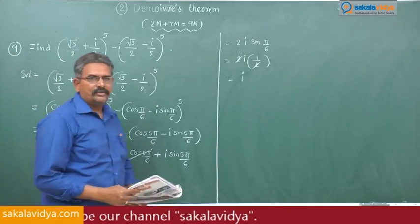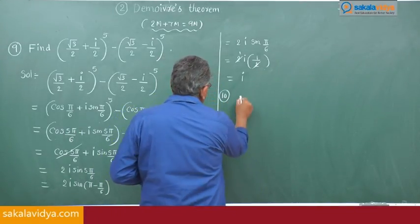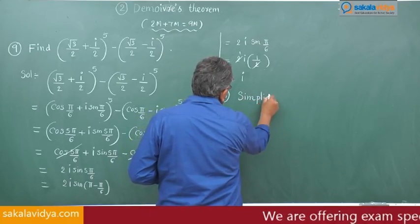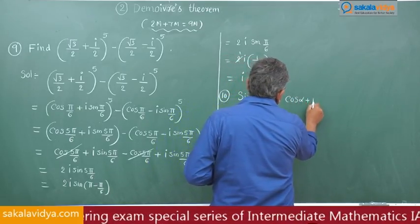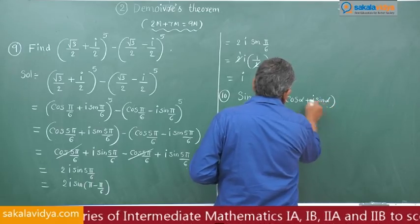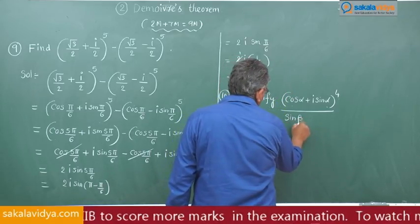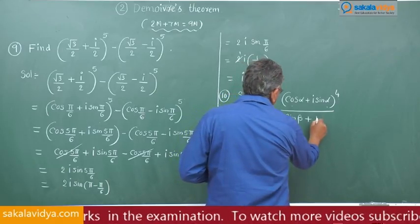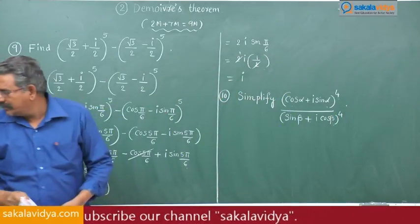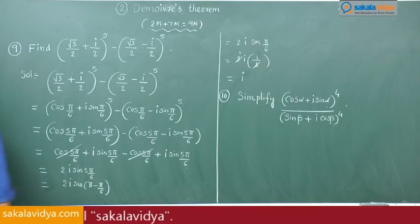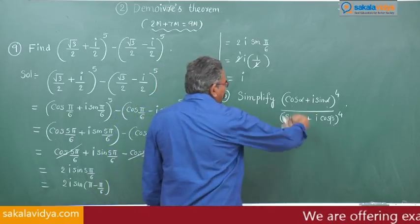Now we move to Problem 10: simplify (cos α + i sin α)^4 / (sin β + i cos β)^4.